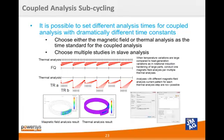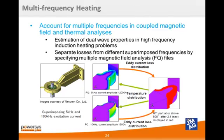It is now possible to use sub-cycling in coupled problems with dramatically different time constants. To use this tool, you select either the magnetic or thermal analysis as the time standard for the coupled analysis, then set the slave study. This means you can conduct multiple steps in one analysis domain for each single step in the other domain. It is also now possible to drive a thermal model with multiple frequencies, allowing you to separate losses from different frequencies and obtain a clearer picture of how each frequency affects the thermal response.